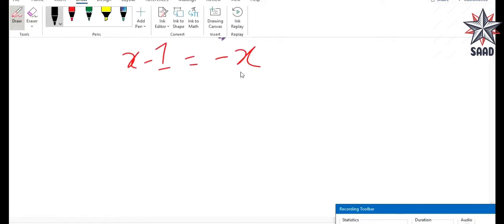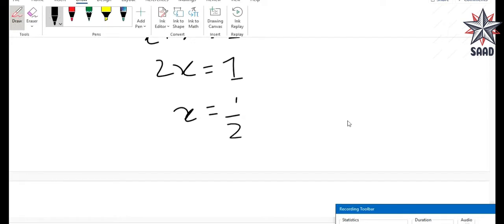Taking x from right hand side to left hand side and minus 1 from left hand side to right hand side will give x plus x equals 1, which is 2x equals 1, x equals 1 by 2.